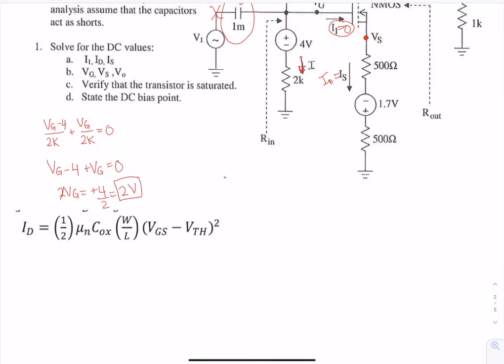So we have VS here, and we can rewrite VS to be plus ID times 500 minus 1.7 plus ID times 500.